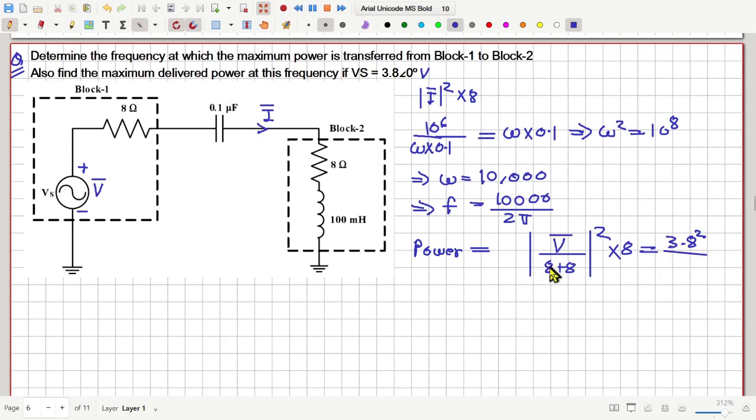Then, divided by 16 squared multiplied by 8, this is equal to 3.8 squared by 4.8. So, that's the maximum power delivered from block 1 to block 2.